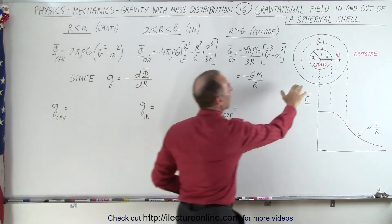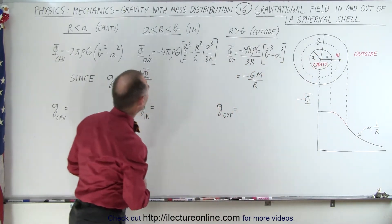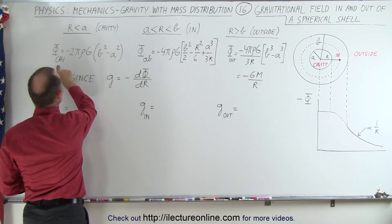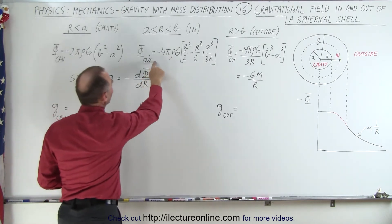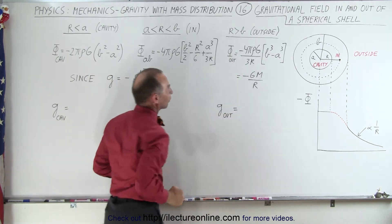So inside the cavity, outside the shell, and inside the material. From the previous videos we have three equations that describe the gravitational potential inside the cavity, in the region between A and B, and outside the spherical shell.